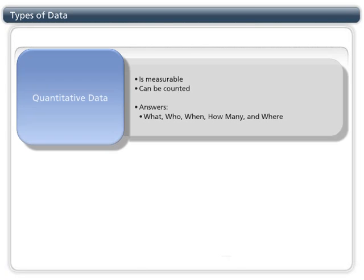Data can also be characterized as either qualitative or quantitative. Quantitative data is measurable or can be counted, like how often people do certain behaviors or what diseases are impacting who and where. Quantitative data answers what, who, when, how many, and where health-related questions.